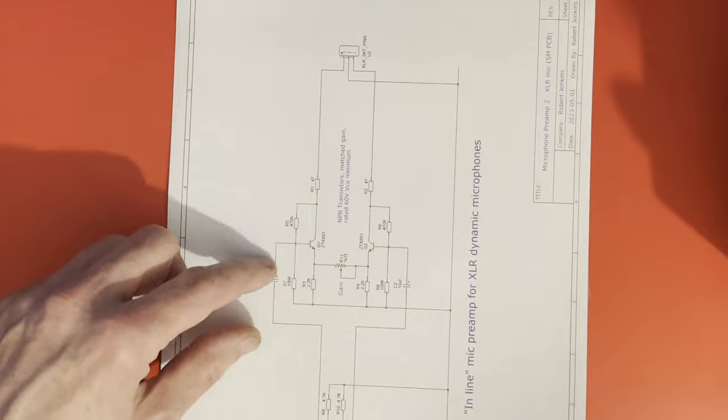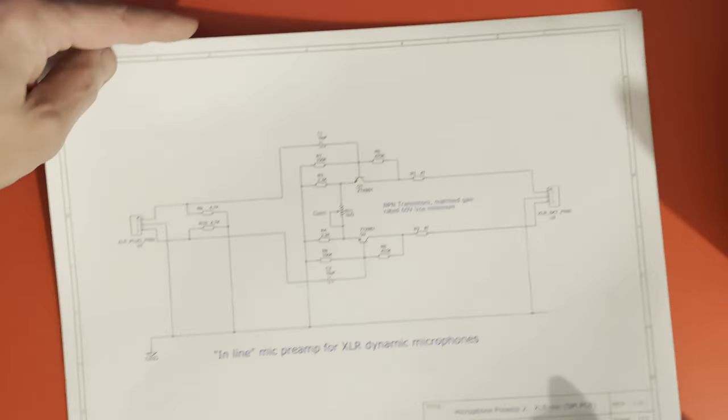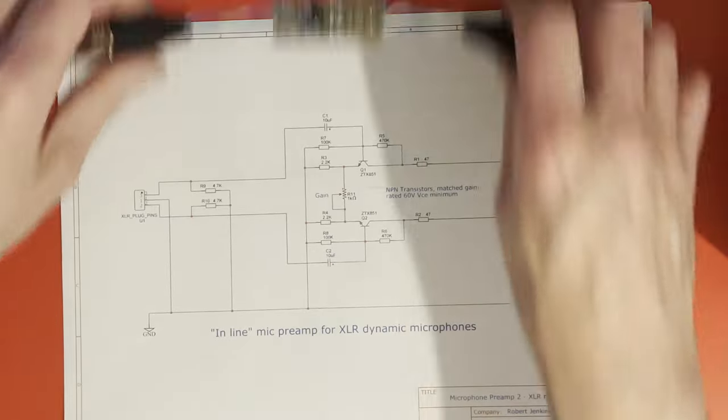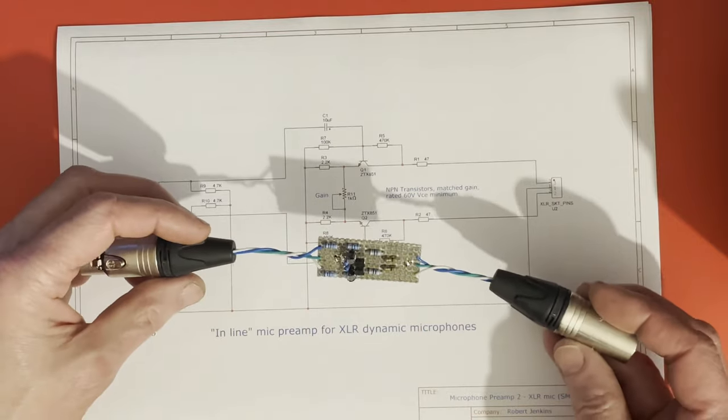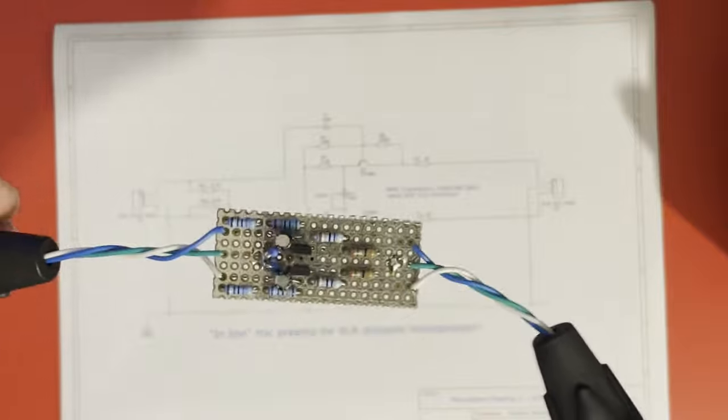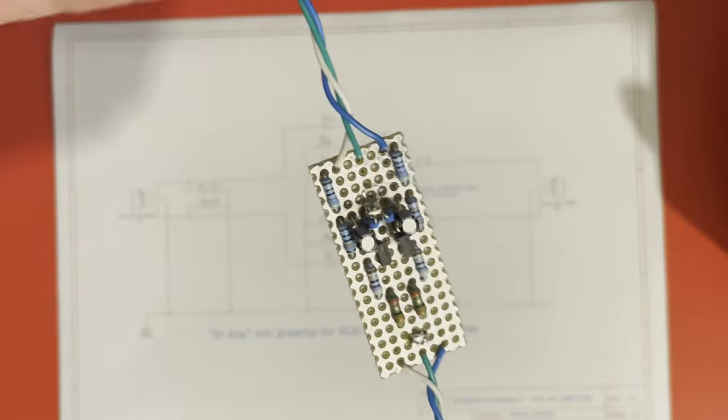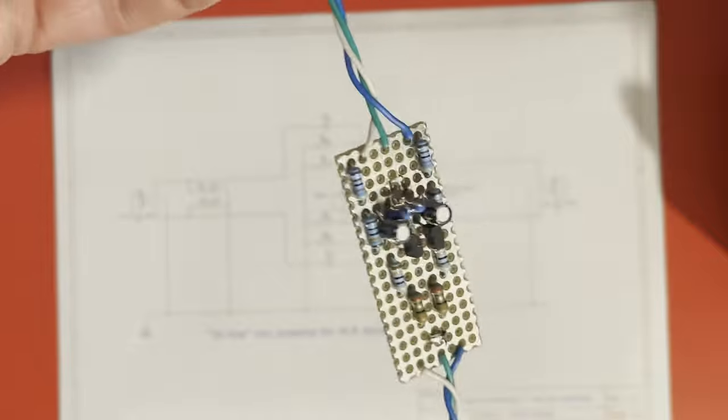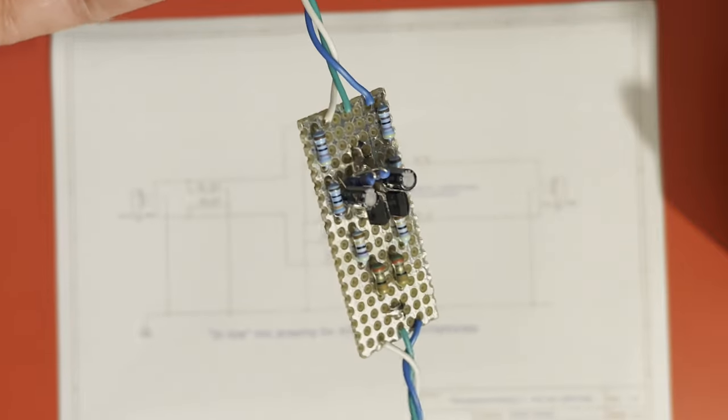But it's fairly simple, fairly straightforward. That's a prototype on a bit of, not a board, sorry, a bit of matrix board, square pad with ground plane. It could easily be a bit of stripboard or veroboard.